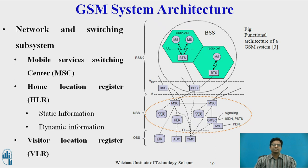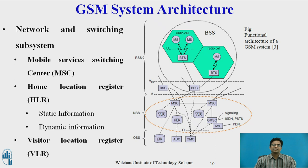The Mobile Service Switching Center (MSC) is used to set up connections to other MSCs and to BSC via the A interface, and it also manages several BSCs. MSC handles all signalling needed for connection setup and connection release between MS and BSC. It is also responsible for handling handover and connection to other MSCs.